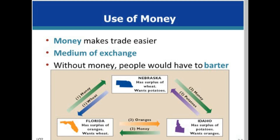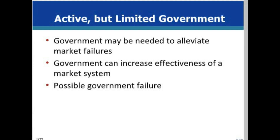It is much easier to sell what you produce for money and then buy what you want. Otherwise, you would have to barter for what you want, which means you not only have to find someone who has what you want, but also wants what you have. Money is socially defined — whatever society accepts as a medium of exchange is money.